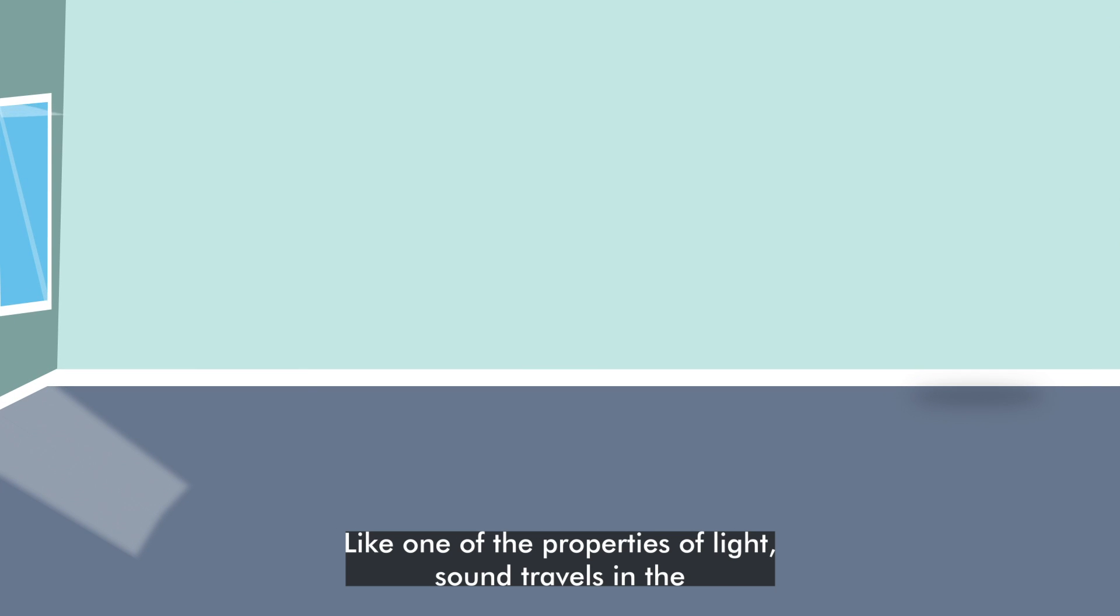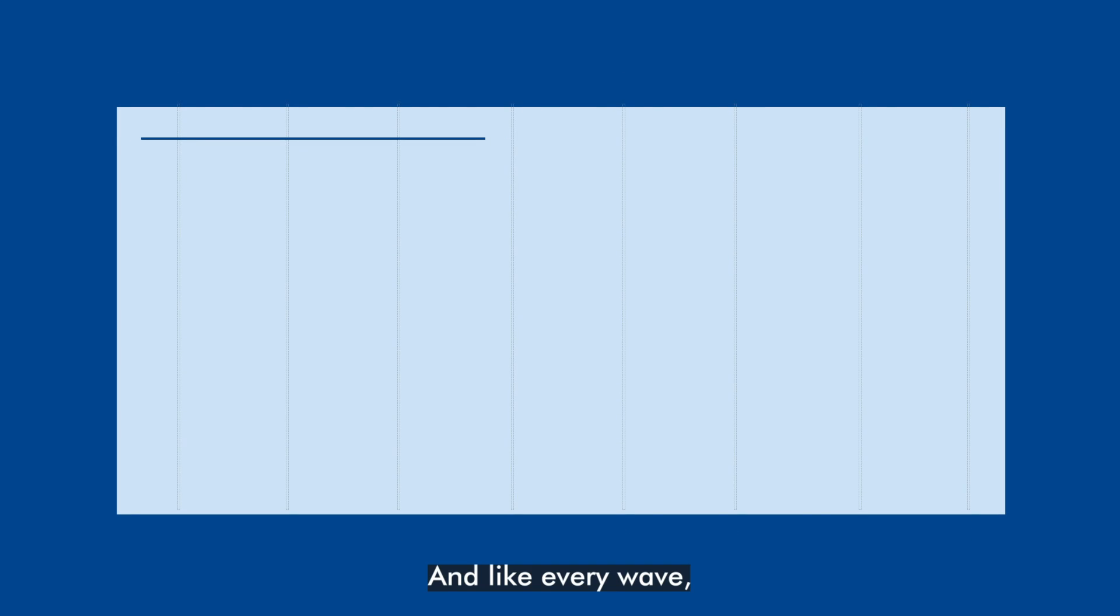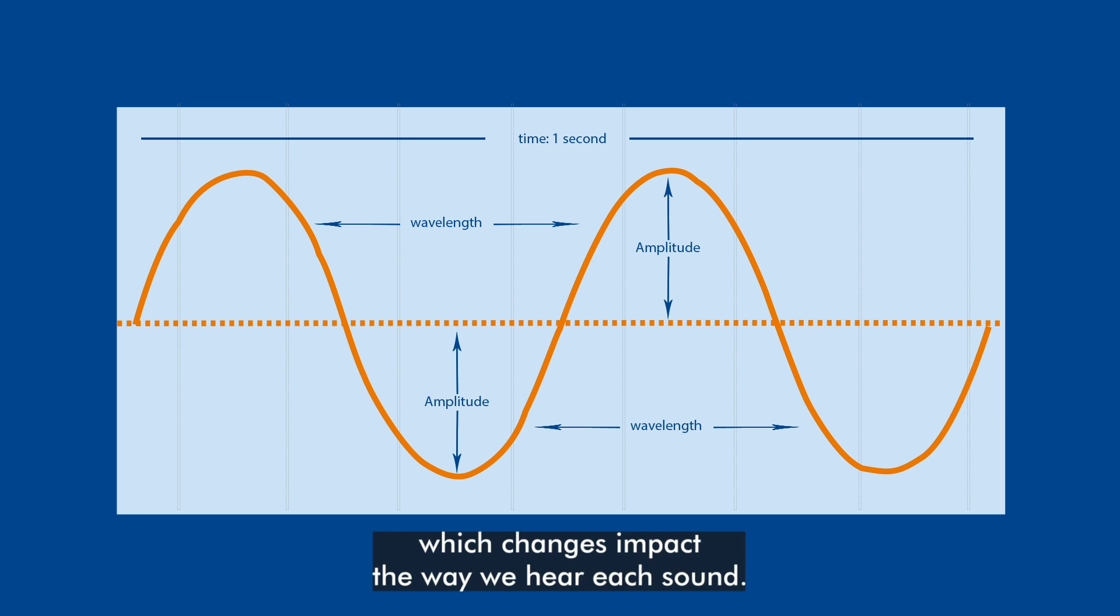Like one of the properties of light, sound travels in the form of waves. And like every wave, it has a frequency, wavelength and amplitude whose changes impact the way we hear each sound.